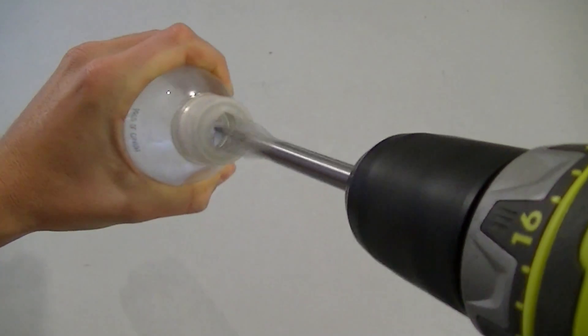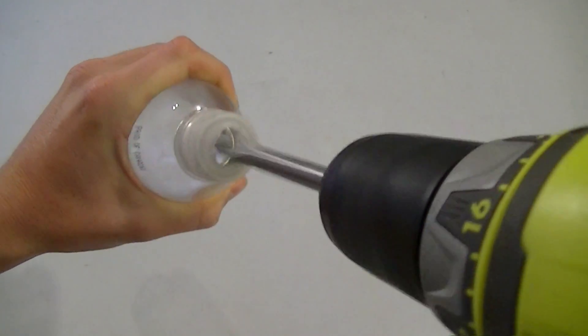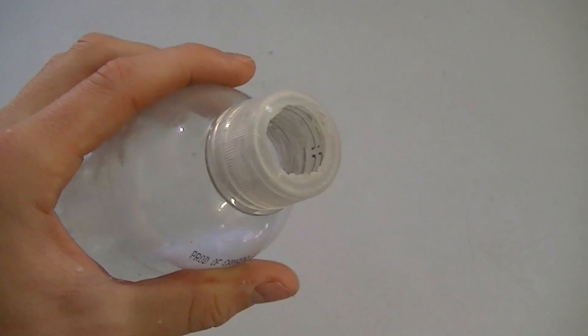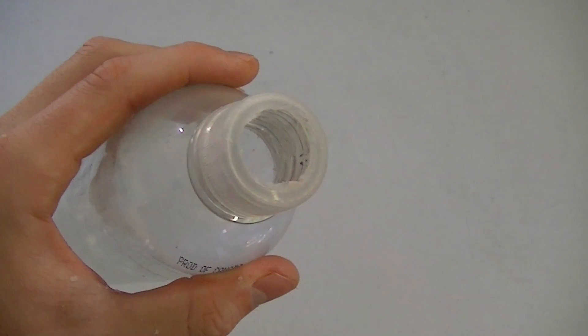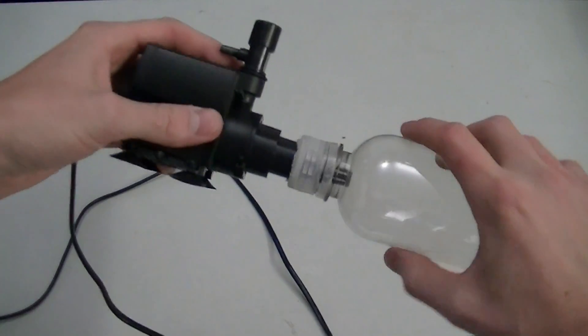We're then going to drill a hole out in the cap of our bottle, big enough to fit the intake of our powerhead. The size of this hole will depend on the size of the powerhead that you're using. Take your time on this step because we want to ensure that our powerhead fits as tight as possible into the cap.